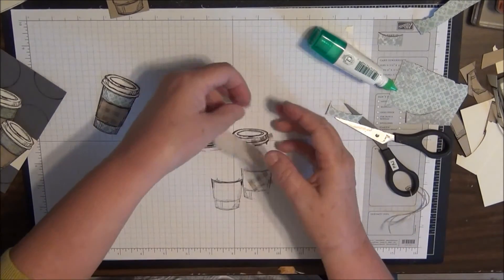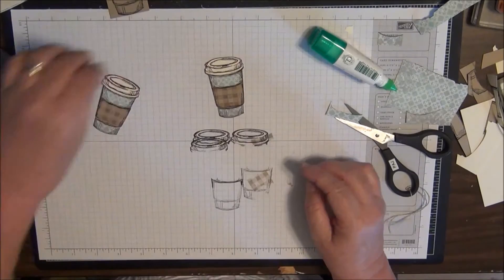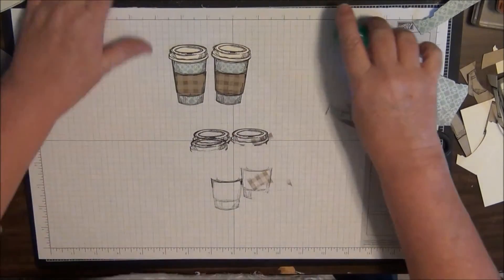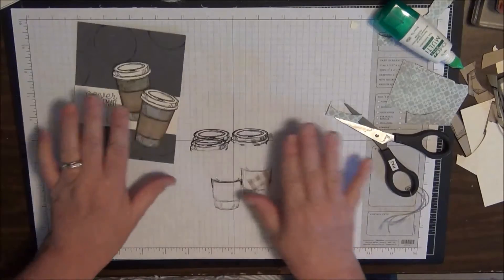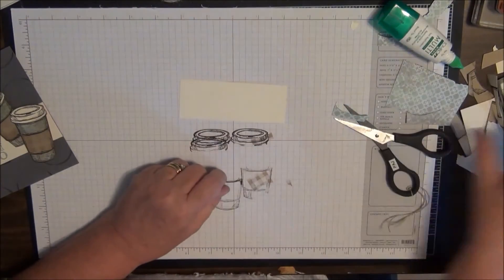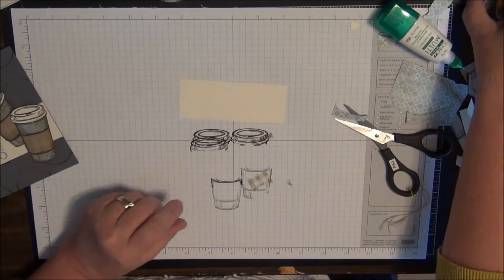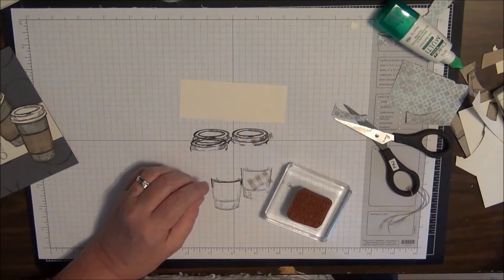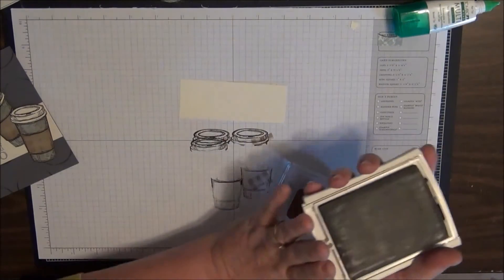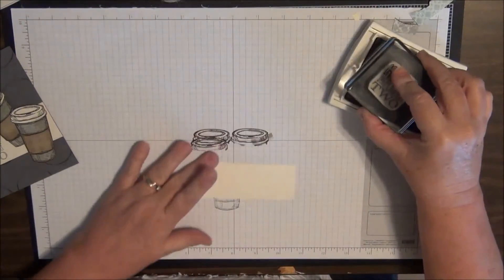Okay, so now we have our cups. Our two cups. Now you tell me these doggone things aren't cute! Oh, they are too cute. So let's go ahead and get the rest of the card done.